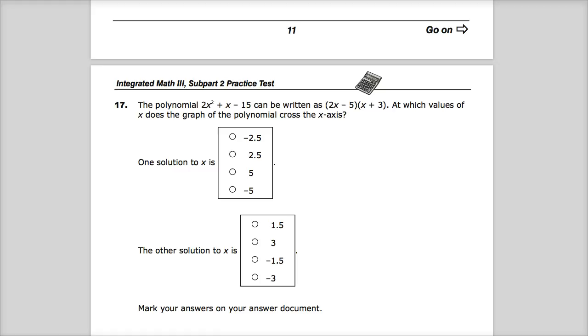A quadratic, 2x squared. It's like reunited and it feels so good. I feel like I'm in Math 2 again. The polynomial 2x squared plus x minus 15 can be written as 2x minus 5 times x plus 3. At which values of x does the graph of the polynomial cross the x-axis?